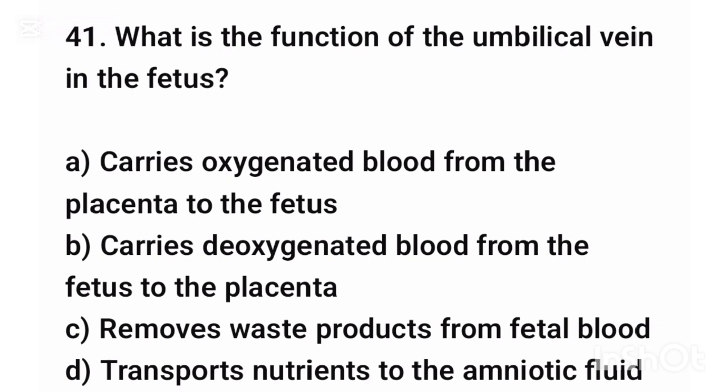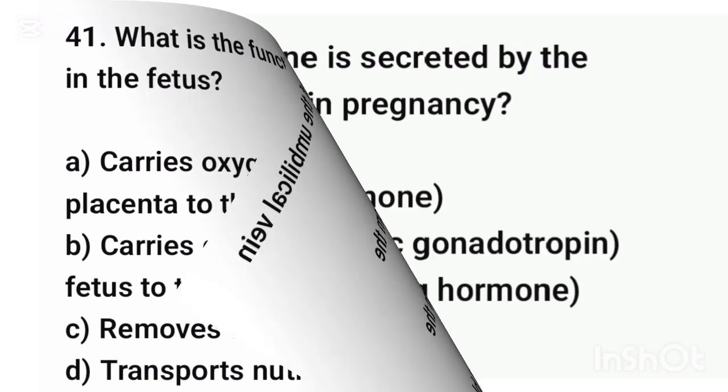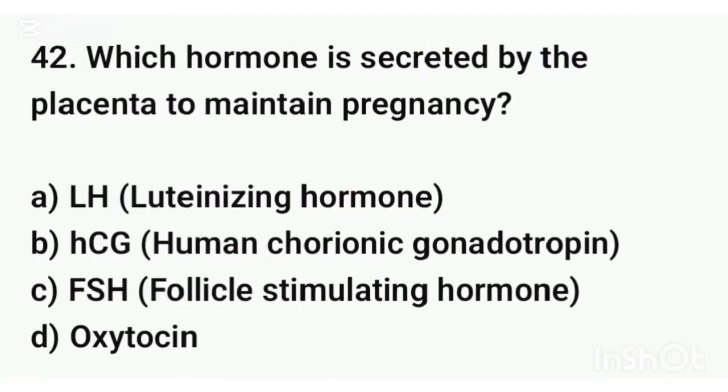Question number forty-one. What is the function of the umbilical vein in the fetus? The correct answer is option A: It carries oxygenated blood from the placenta to the fetus.